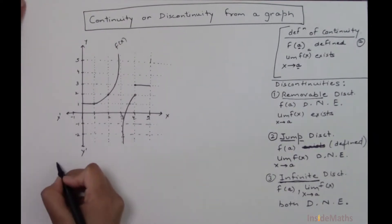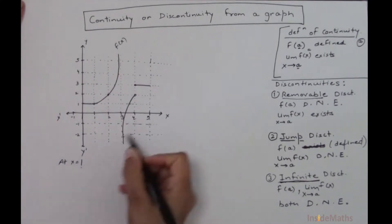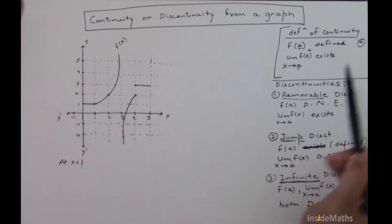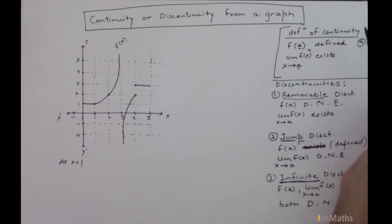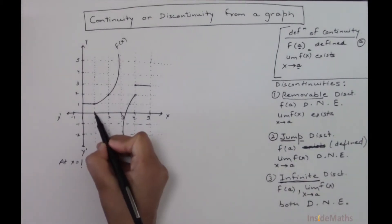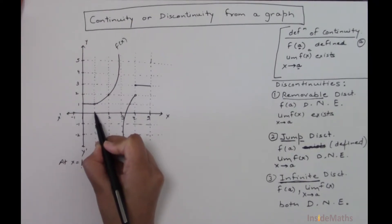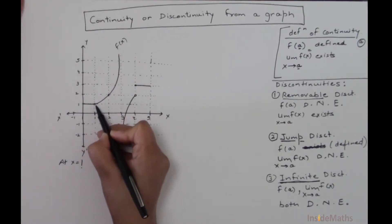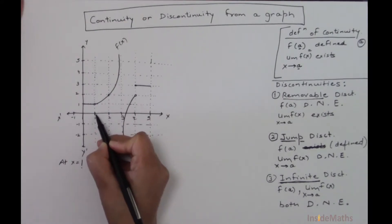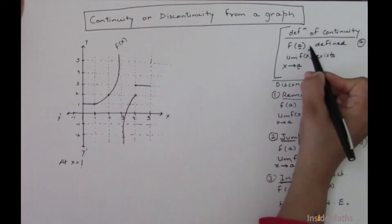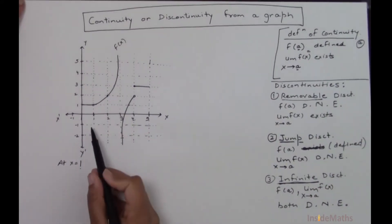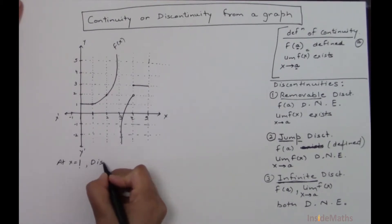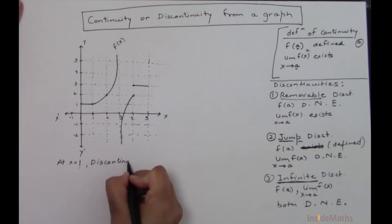Now let's check the continuity at the point x = 1. To check continuity, we first check whether the function is defined. At x = 1, as you can see there is a little hole, so the function does not exist at this point. The first condition does not hold, which means the function is discontinuous at x = 1.